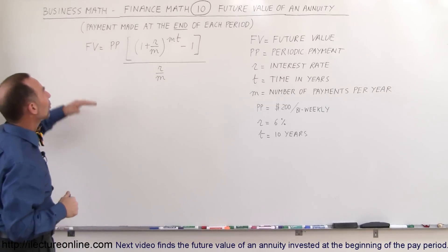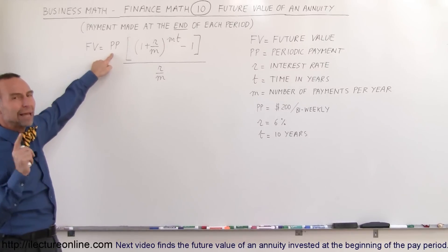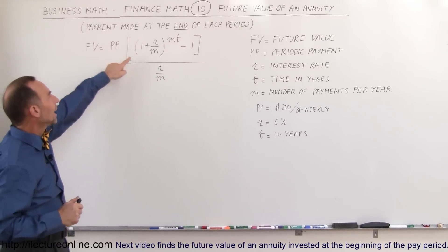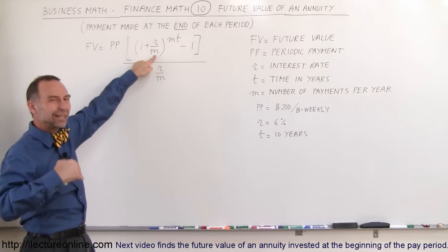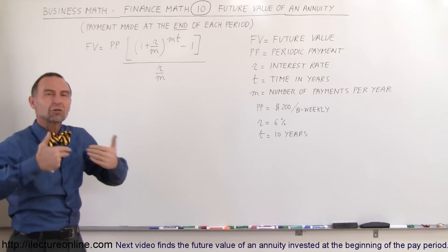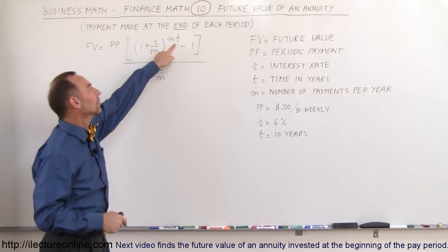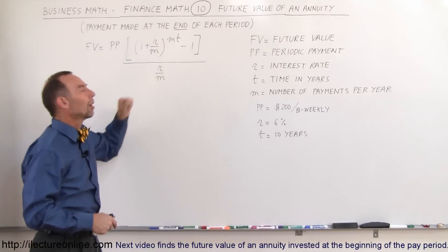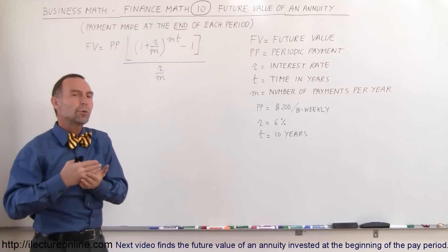So here we have the equation. The future value is equal to the periodic payment, we'll get into that in just a moment, times 1 plus the interest rate divided by the number of payments per year. It's kind of like conversions per year when we do compound interest, but in this case, we're paying ourselves, so they're periodic payments, times m times t, that's the exponent, minus 1 divided by r over m. So FV stands for future value. What will it be worth in the future?